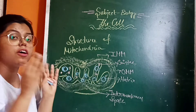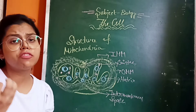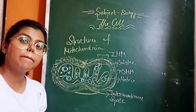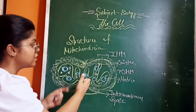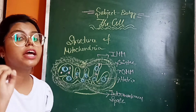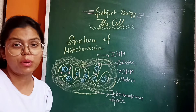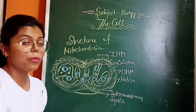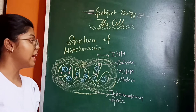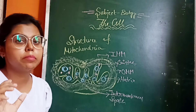Most of the energy of your body is provided by the mitochondria. Inside the mitochondrial matrix there are different types of enzymes which are present and help in the energy production process.